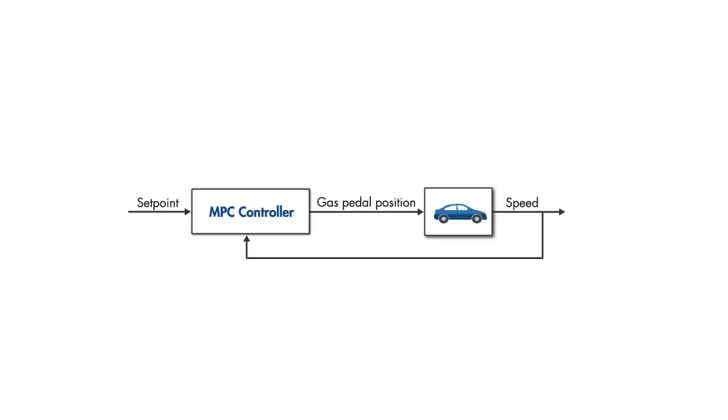Let's say that an MPC controller controls the speed of this car by adjusting the gas pedal. Since there is a physical limit on how much the gas pedal can be moved, we want to have a hard constraint so that the gas pedal position stays within this range. We may also want to enforce the speed to stay between certain values. However, having hard constraints on both inputs and outputs is not a good idea, because these constraints may conflict with each other, leading to an infeasible solution for the optimization problem.